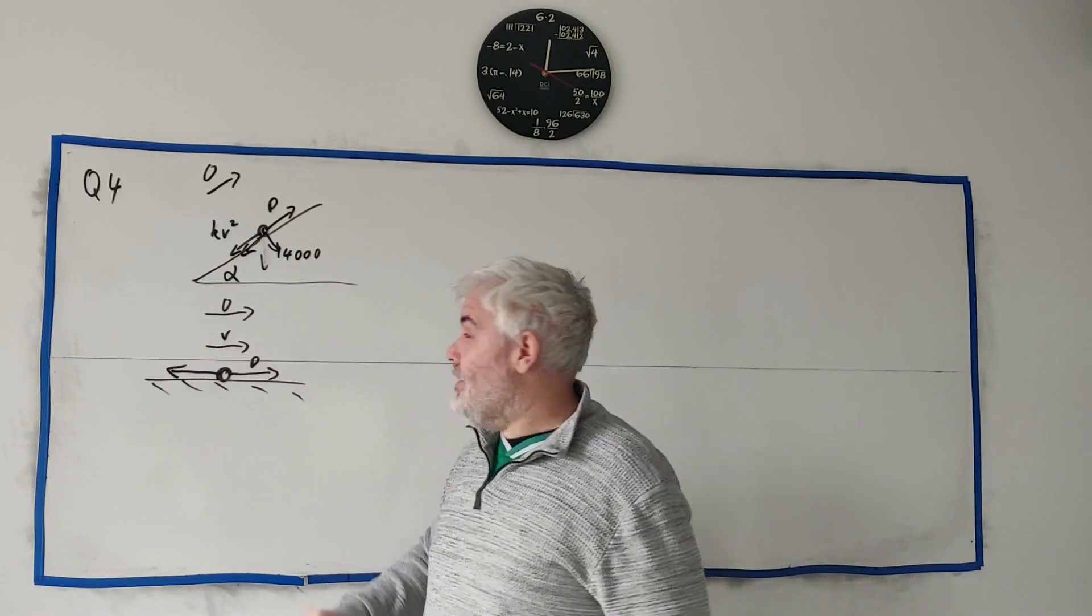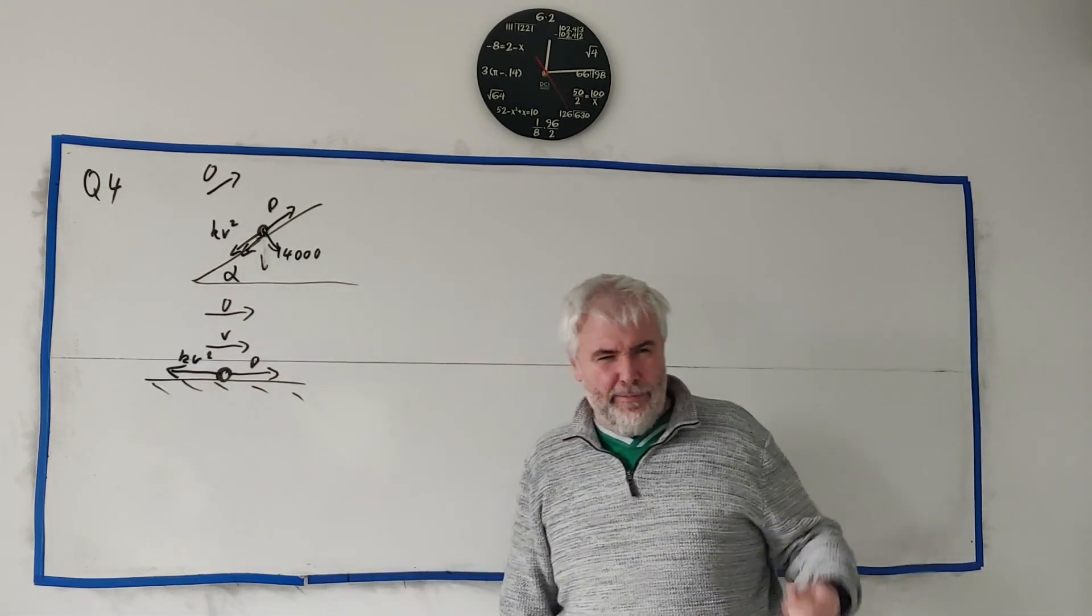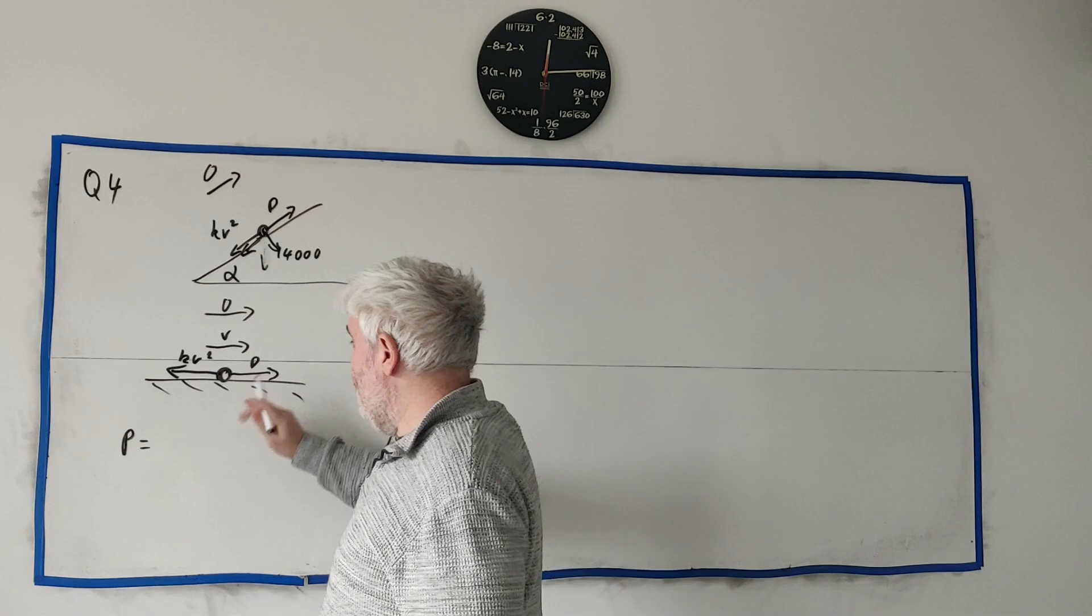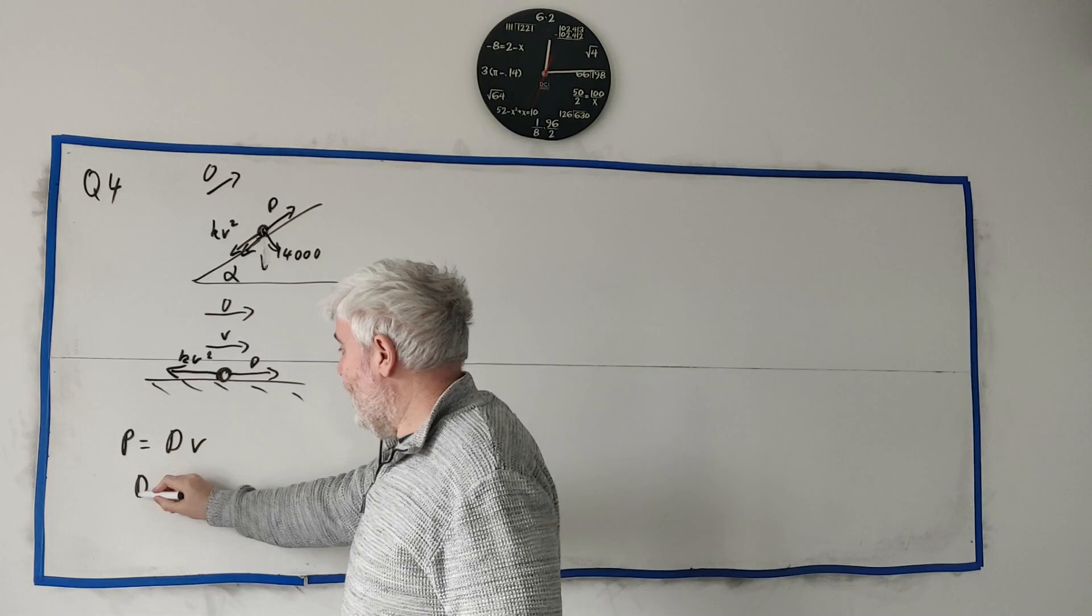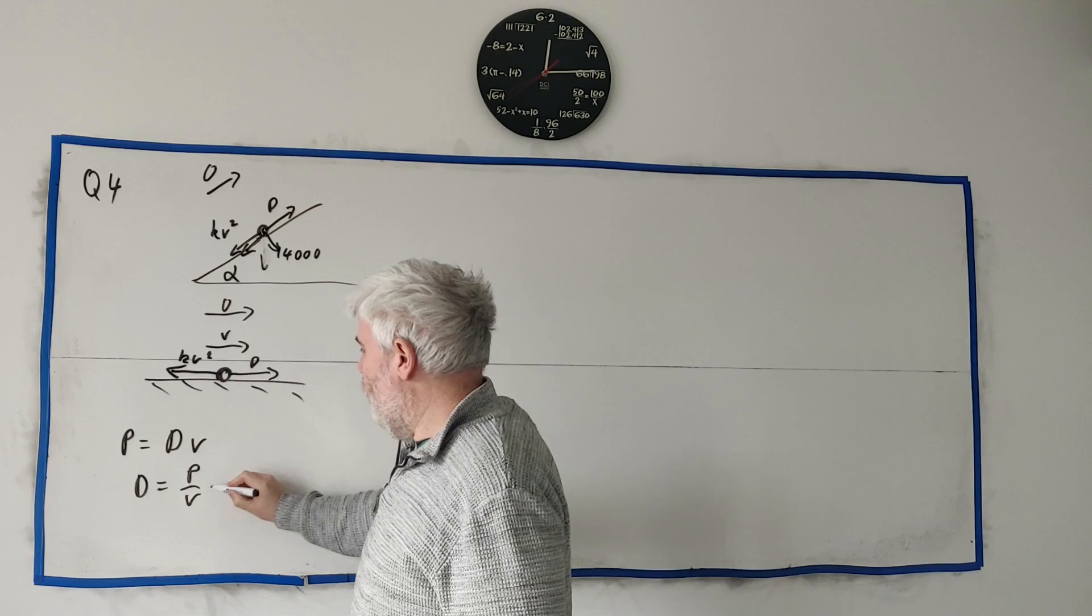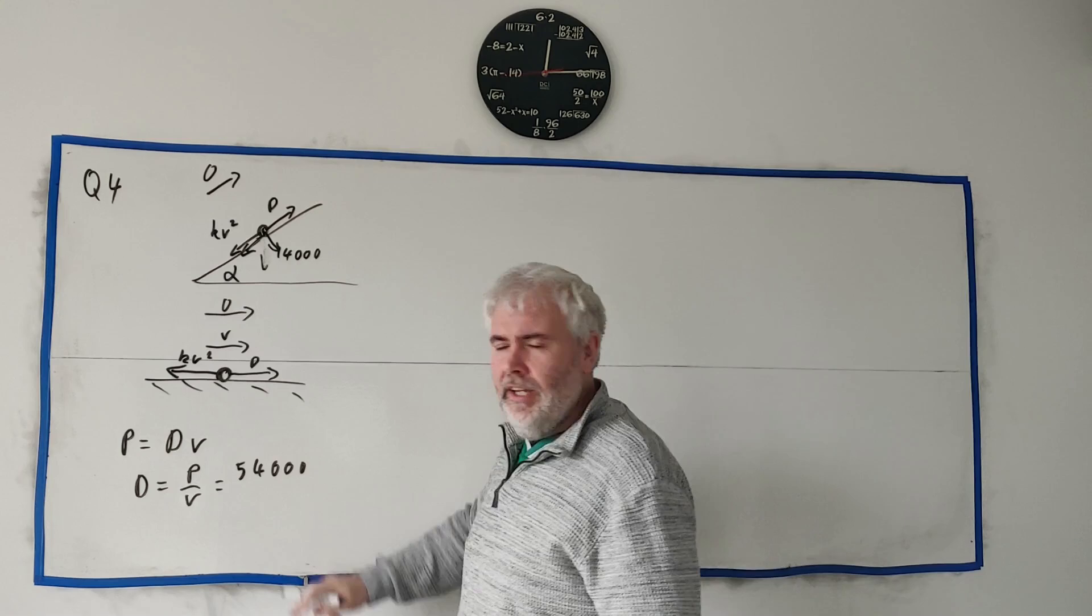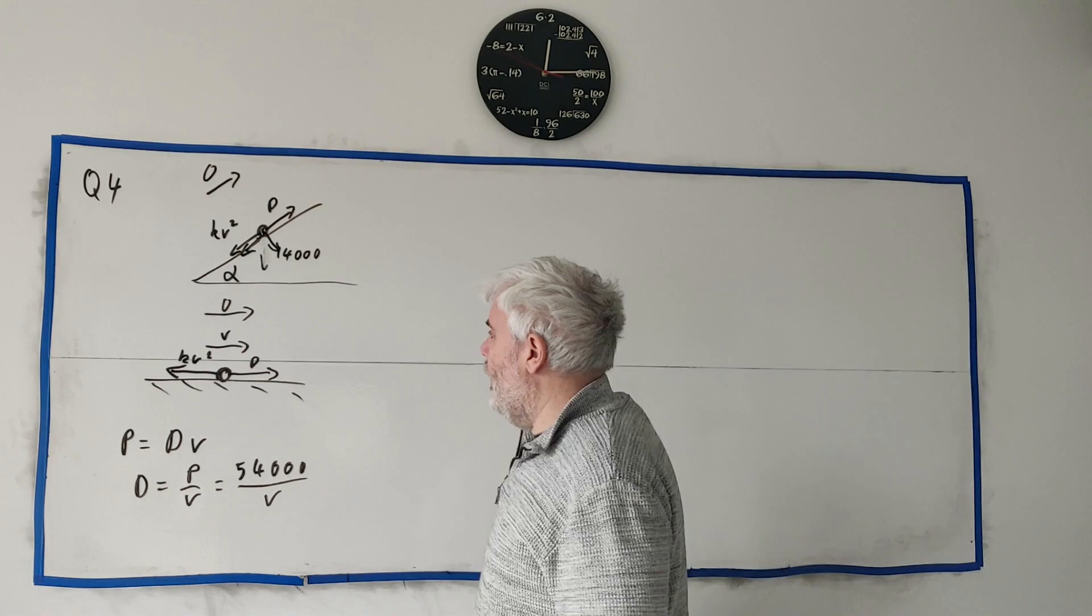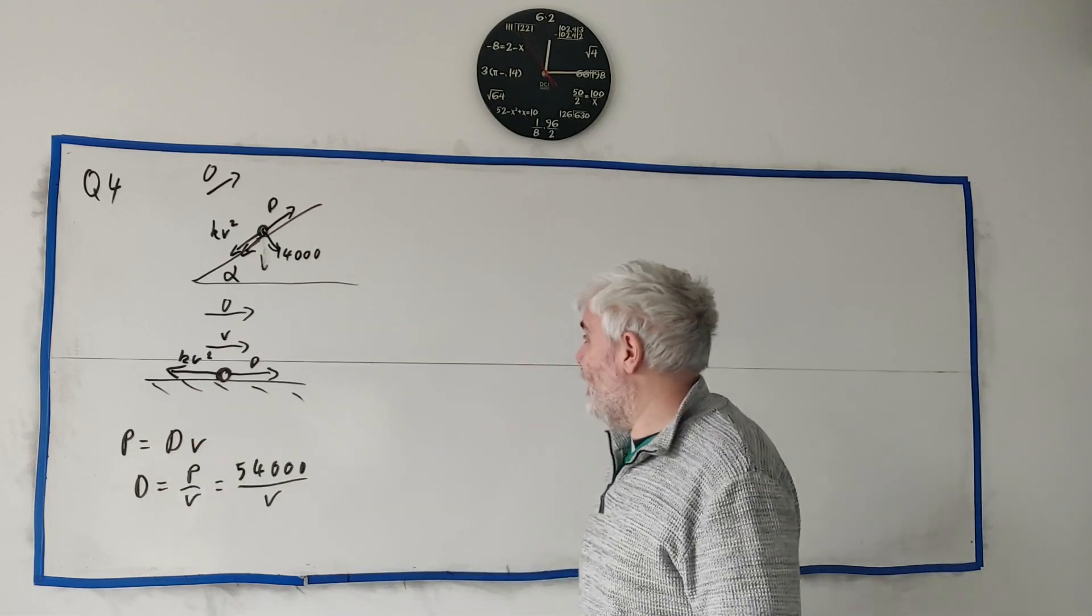Again, they don't give us the number this time. But we still know it's KV squared. And that's really mainly the trick here. Well, add in the fact that power equals the driving force here times the velocity here. Rearrange that. D equals P over V. And we know P. It's 54,000. Don't forget the thousand. They give you in kilowatts, not in watts. Divided by V. That's all the forces on this. And we know it's in equilibrium. We know the forces to the right equal the forces to the left.